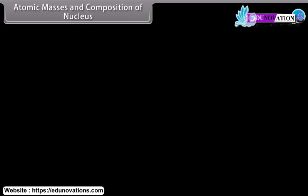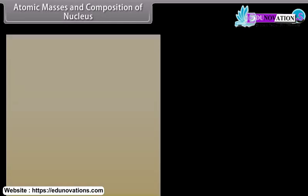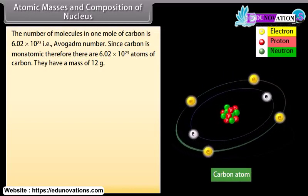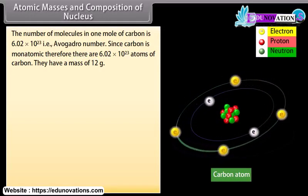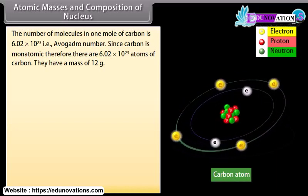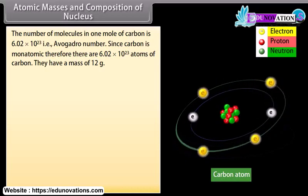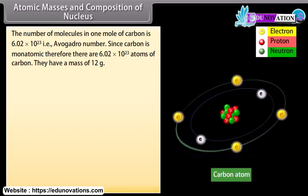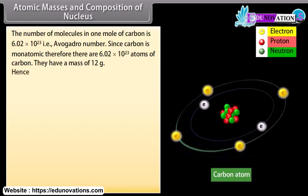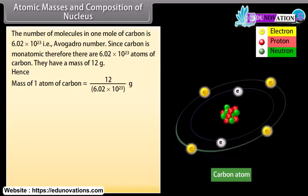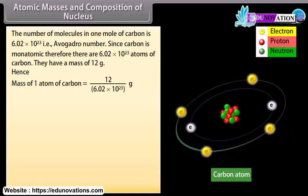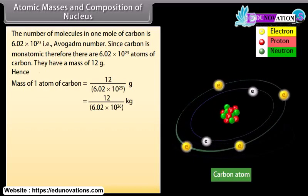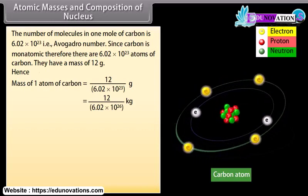Atomic masses and composition of nucleus: The number of molecules in one mole of carbon is 6.02 × 10²³, that is Avogadro's number. Since carbon is monoatomic, there are 6.02 × 10²³ atoms of carbon having a mass of 12 grams. Hence, mass of 1 atom of carbon is equal to 12 / (6.02 × 10²³) grams, which is equal to 12 / (6.02 × 10²⁶) kilogram.